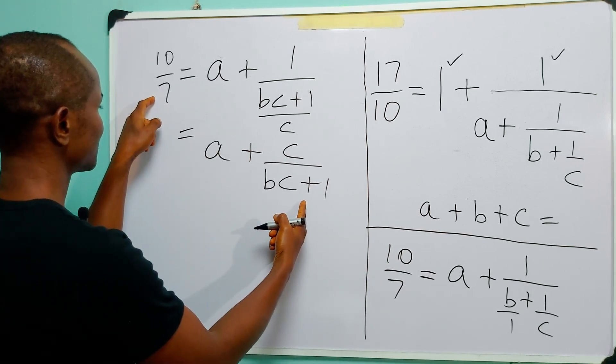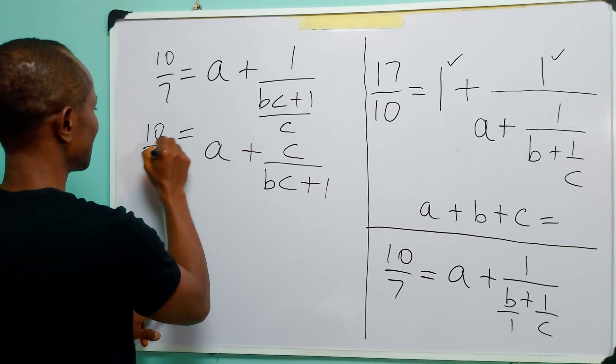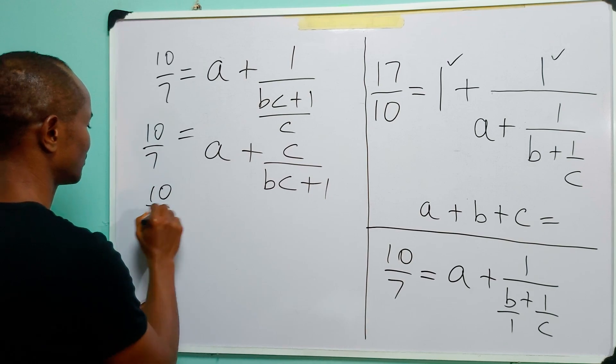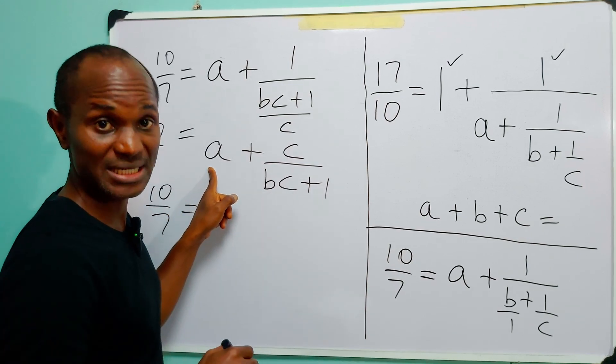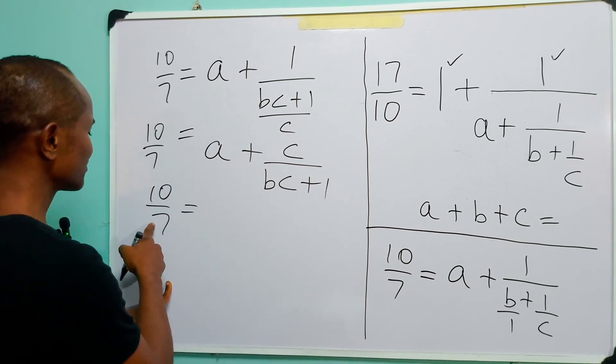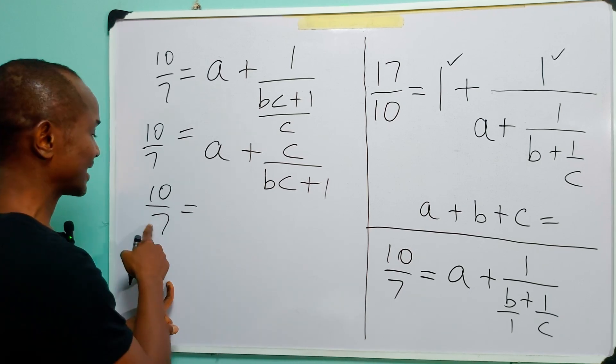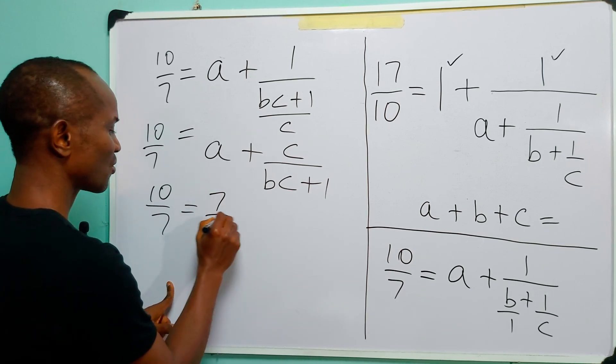Now, when you look at this and look at this, you know that, of course, this is 10 over 7. A, B, and C must be integers. Now, from this fraction, the only integer we can get from this fraction is 7 over 7.